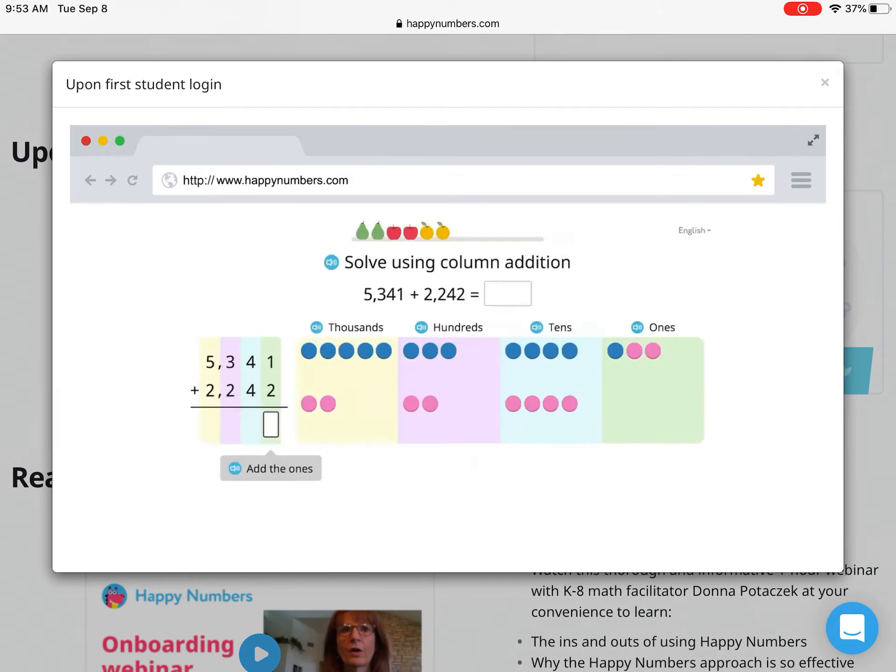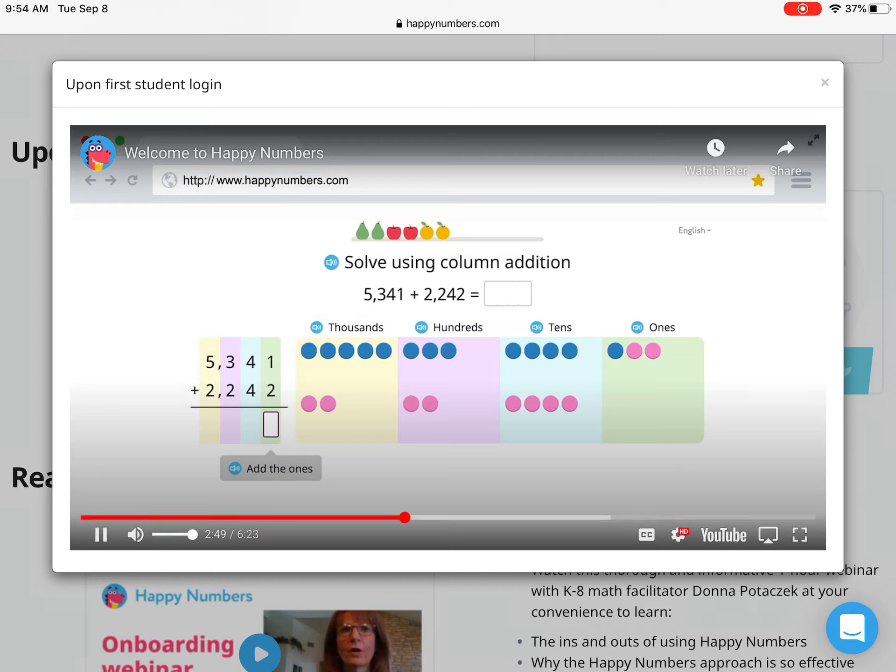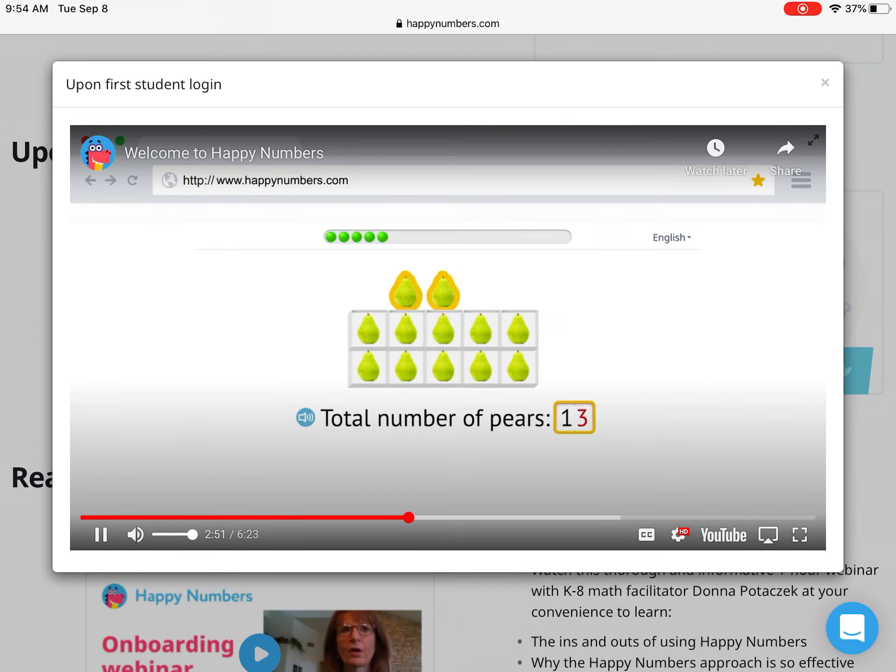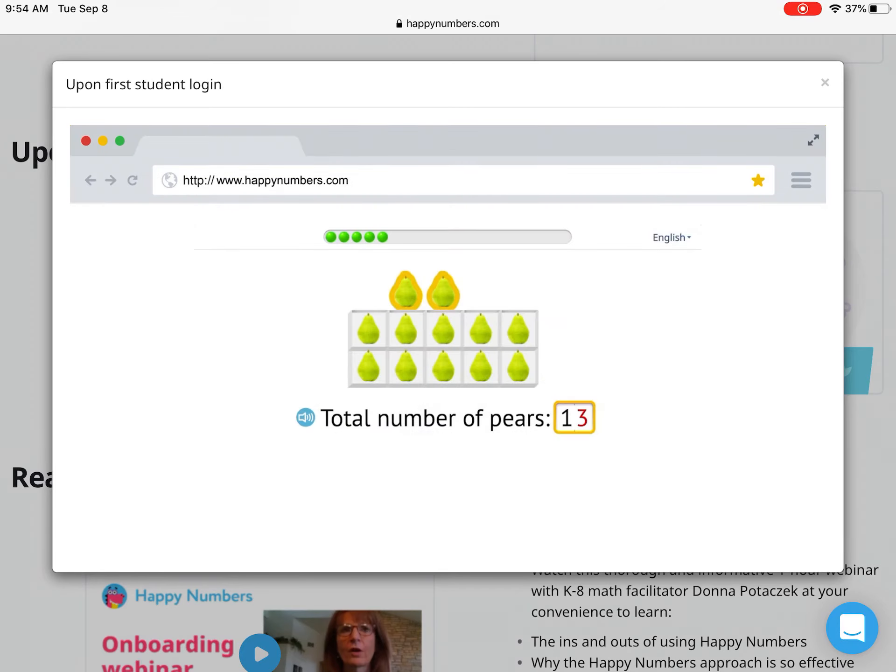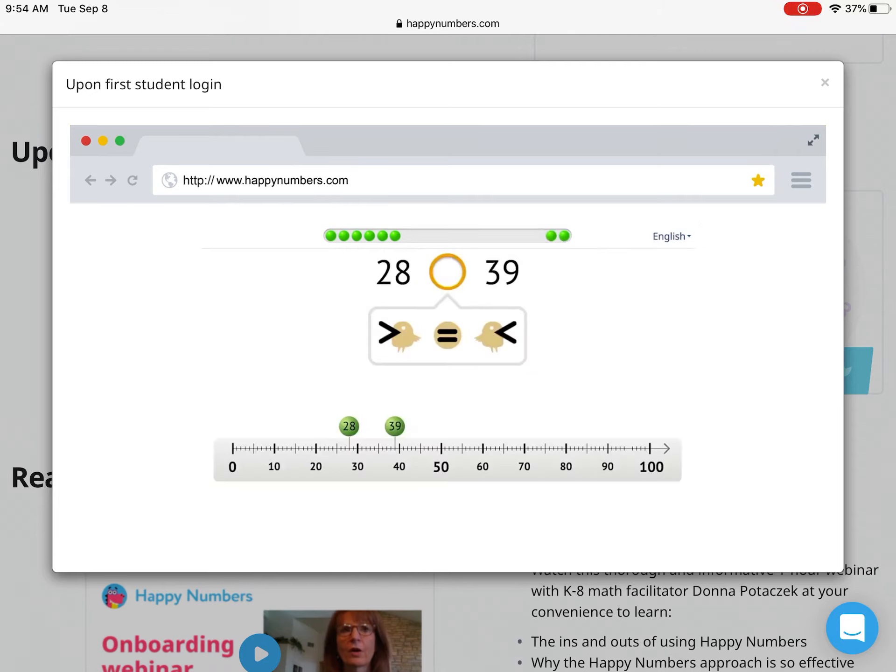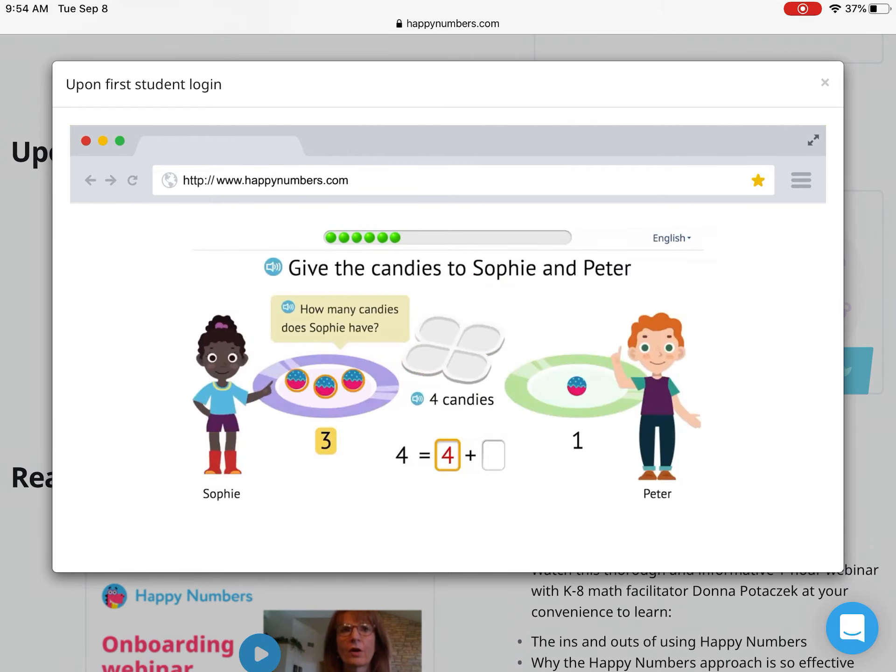We follow a concrete, representational, abstract approach to build conceptual understanding. Students practice skills in Happy Numbers with increasing levels of independence. As students achieve mastery, we slowly peel back the amount of support provided. Students use virtual manipulatives and multiple representations to build confidence and math flexibility.